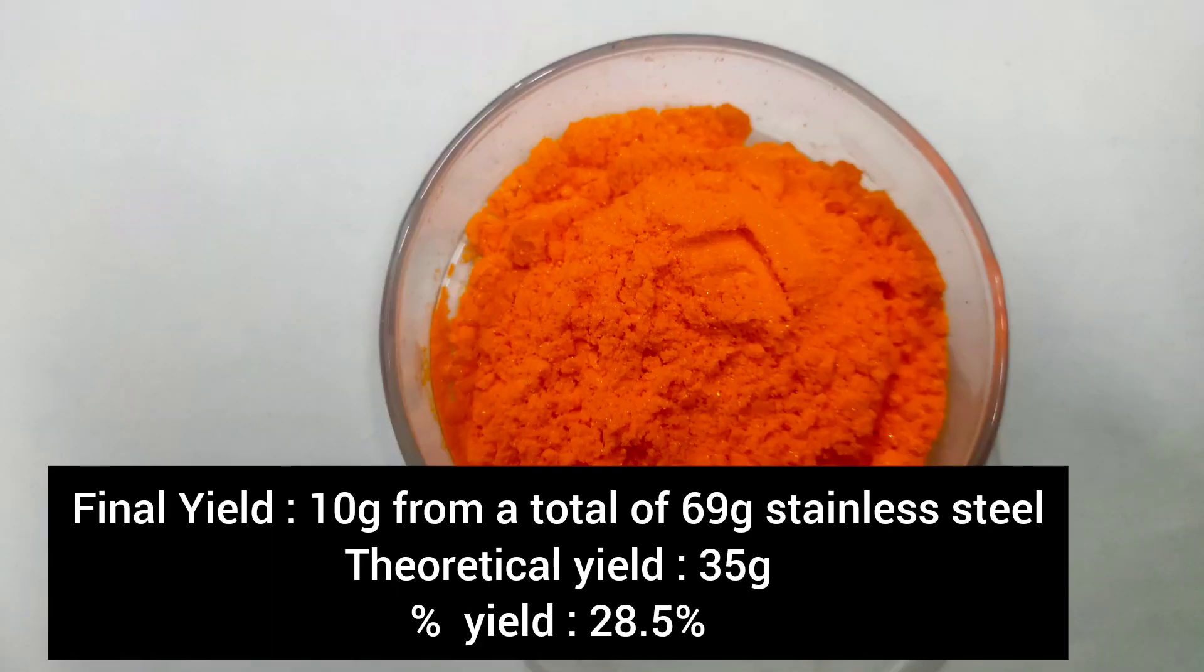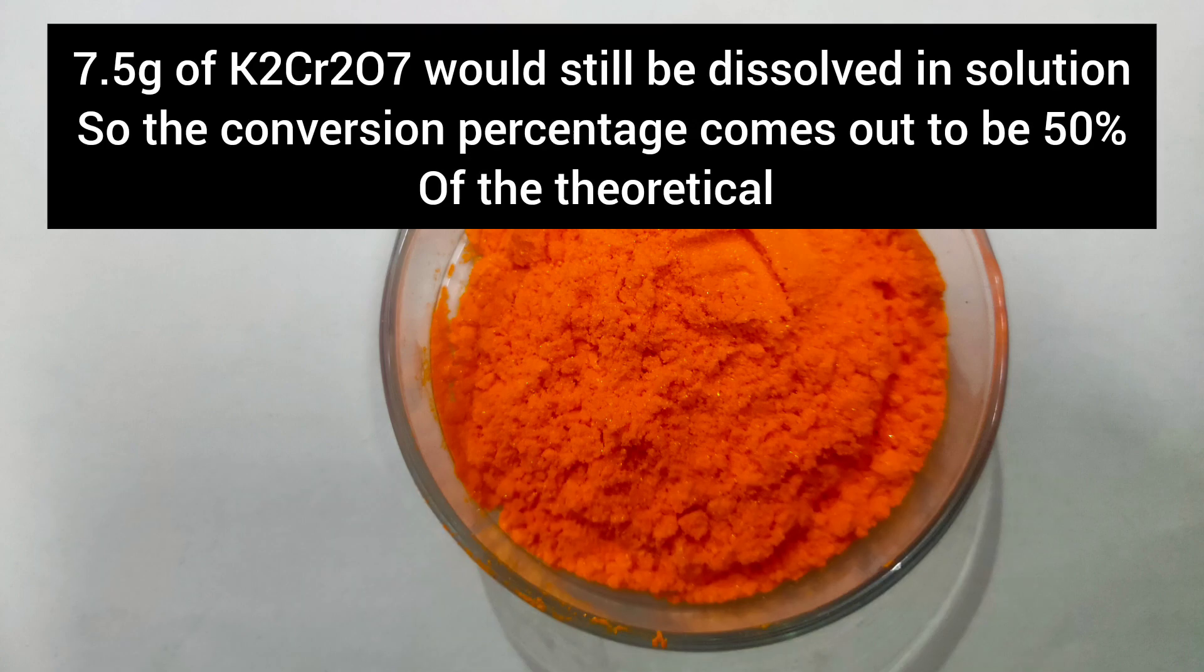After drying, yield came around to be 10g, the theoretical yield being 35g which corresponds to a percentage yield of 28.5%. 7.5g of potassium dichromate will be there in the solution. Taking that into account, the conversion was only 50% of the theoretical.